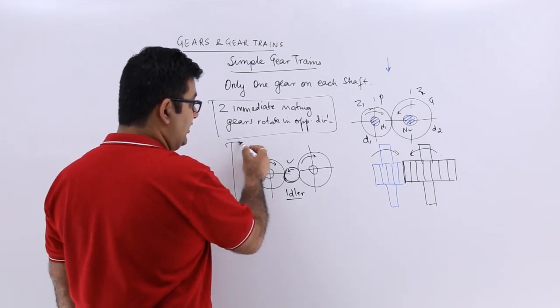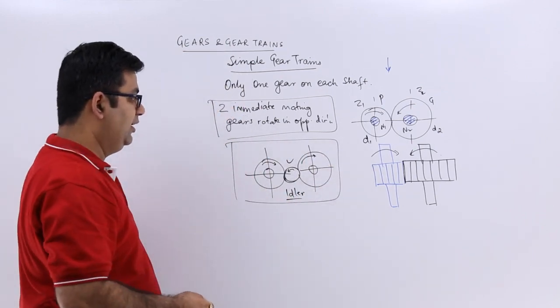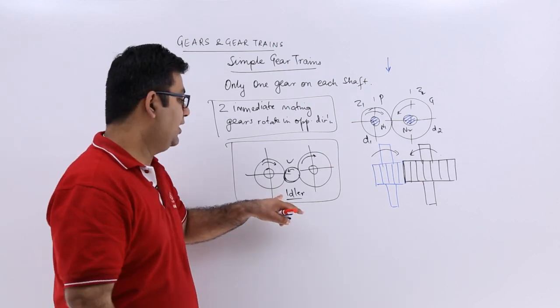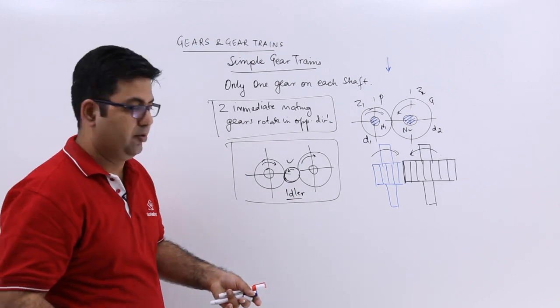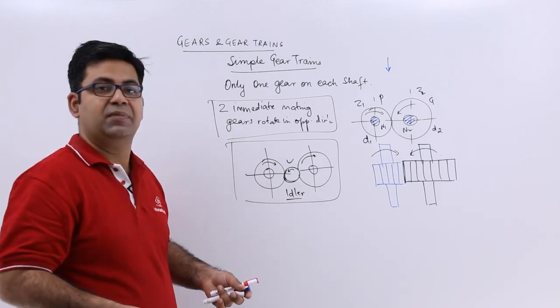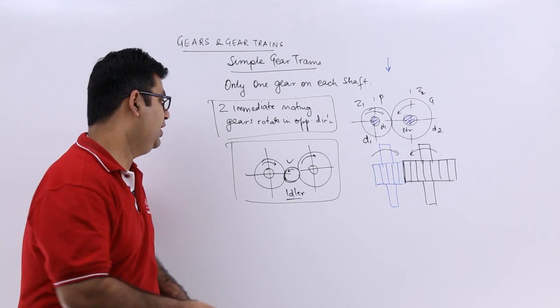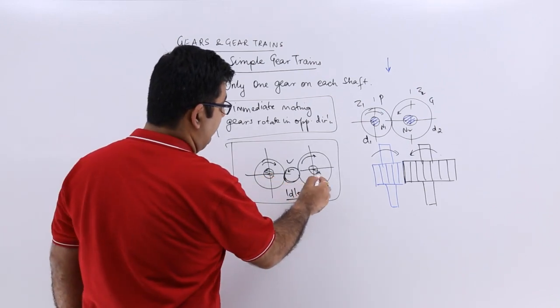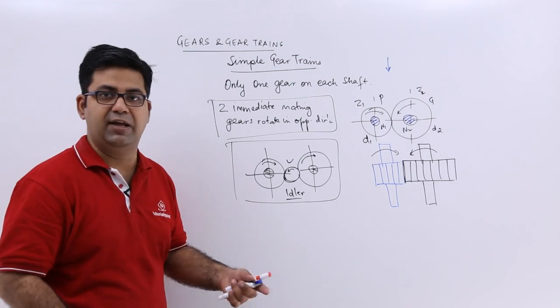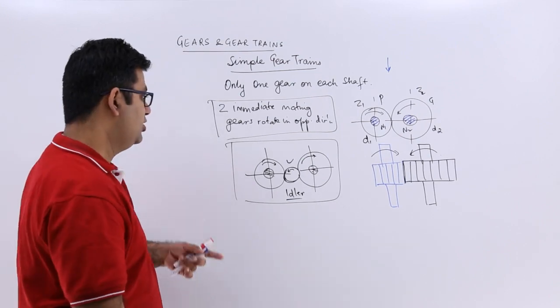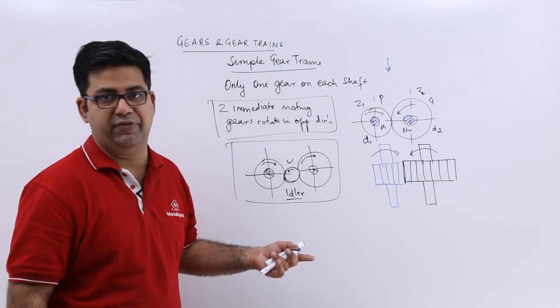You need to see that if you want to keep the direction same, then how many idler gears would be required. If you want to keep them opposite, then how many would be required. It also depends upon what is the distance between the driver and the driven shafts. That many number of idle gears we can use. It is all application based, there is no hard and fast rule for this.